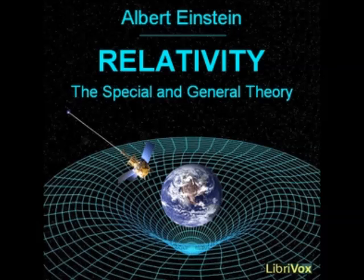Finally, the general principle of relativity permits us to determine the influence of the gravitational field on the course of all those processes which take place according to known laws when a gravitational field is absent, i.e., which have already been fitted into the frame of the special theory of relativity. In this connection, we proceed in principle according to the method which has already been explained for measuring rods, clocks, and freely moving material points. The theory of gravitation derived in this way, from the general postulate of relativity, excels not only in its beauty, nor in removing the defect attaching to classical mechanics which was brought to light in section 21, nor in interpreting the empirical law of the equality of inertial and gravitational mass, but it has also already explained a result of observation in astronomy, against which classical mechanics is powerless.